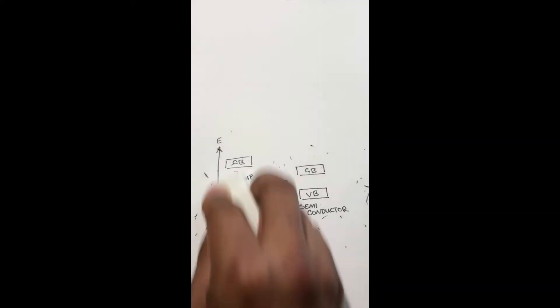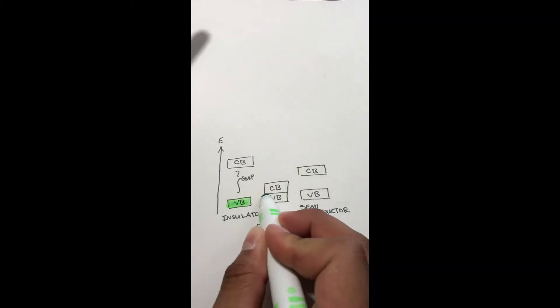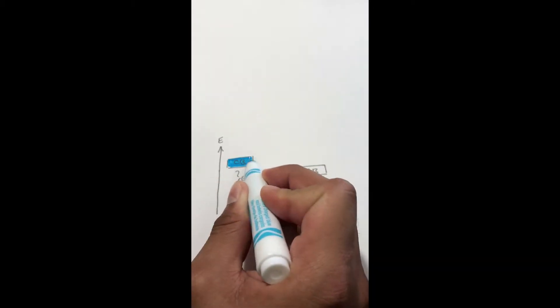However in semiconductors there is a small gap between the valence and conduction band. This means that if the electrons in the valence band are given the right amount of energy from thermal or other excitations they can move into the conduction band.